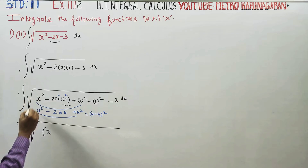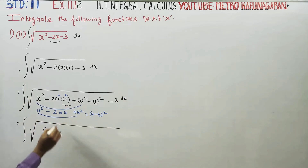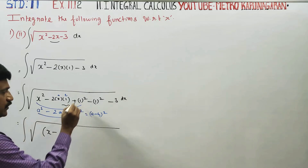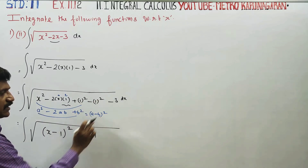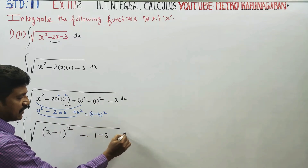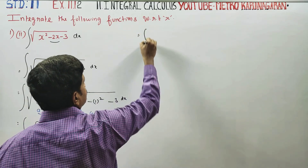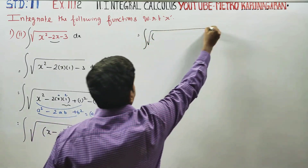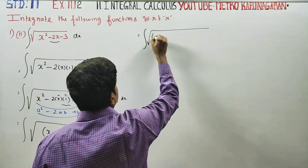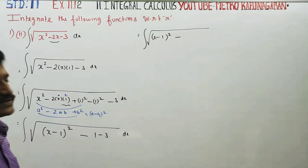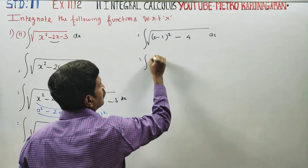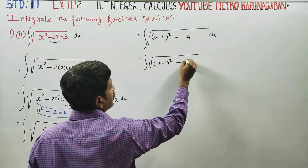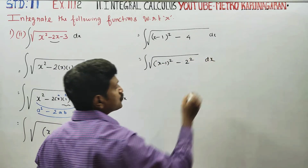So this is a and this is b — a minus b whole square. Applying this, we get x minus 1 whole square minus 4, which can be written as x minus 1 whole square minus 2 squared, dx.